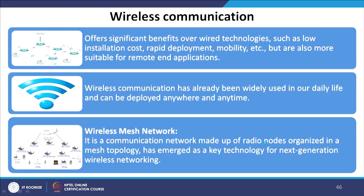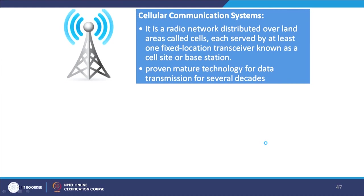A wireless mesh network is a communication network made up of radio nodes organized in a mesh topology and has emerged as a key technology for next-generation wireless networking. Cellular communication is a radio network distributed over land areas called cells, each served by at least one fixed-location transceiver known as a cell site or base station. It has proven to be a mature technology for data transmission for several decades.